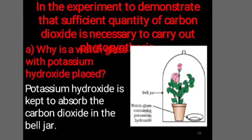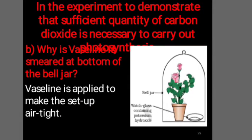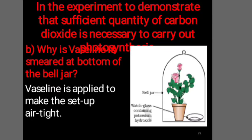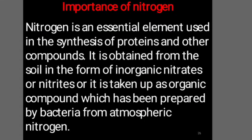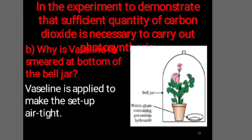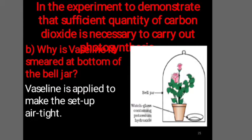Here is an experiment to demonstrate that sufficient quantity of carbon dioxide is necessary to carry out the process of photosynthesis. Why is potassium hydroxide placed inside the pot? Potassium hydroxide is kept to absorb the carbon dioxide in the bell jar. Vaseline is applied to make the setup airtight. Since potassium hydroxide is kept inside the pot, it absorbs all the carbon dioxide. Because of that, unavailability of carbon dioxide makes the leaves unable to prepare starch. This gives us the importance of carbon dioxide.